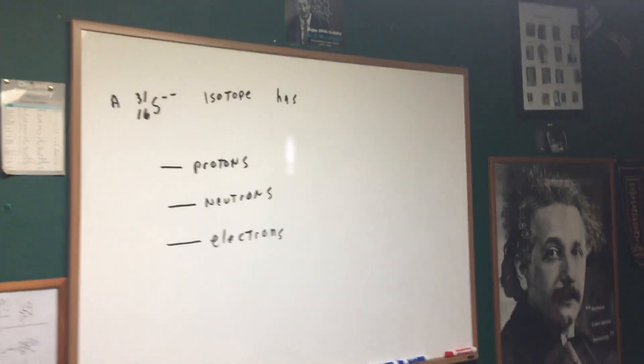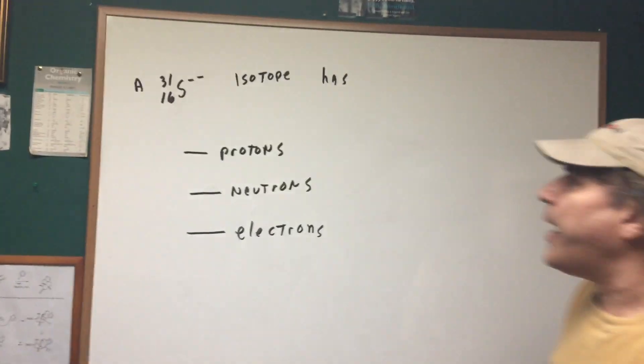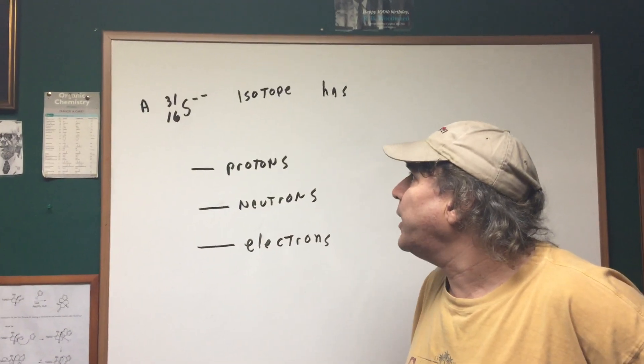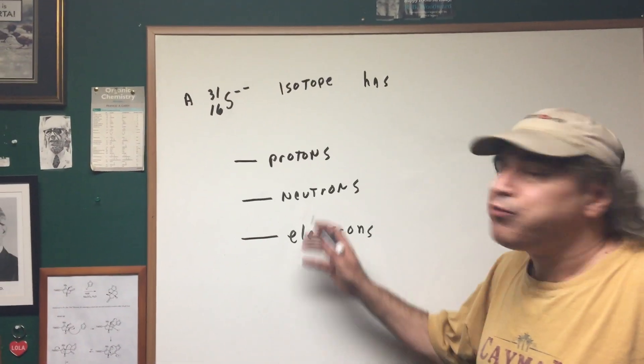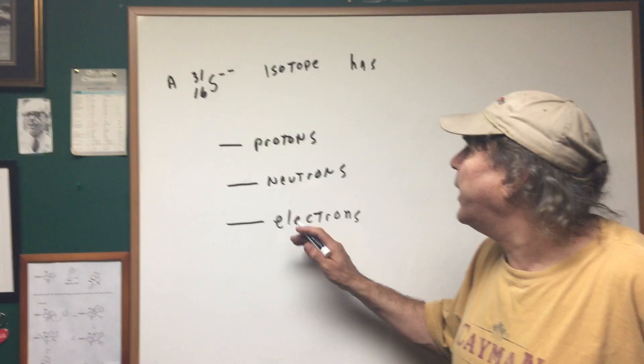Now here's a short back question on the data. I give you a sulfur-31-16 isotope, and I want to know what is the number of protons, neutrons, and electrons.